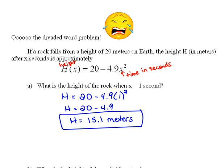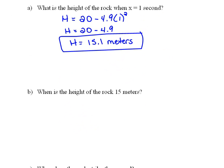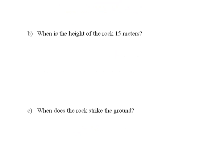Alright, let's look at the next part. The next part says, when is the height of the rock 15 meters? Well, remember, our equation said h equals 20 minus 4.9x squared. Now, I realize that I put h here instead of h of x, but kind of for simplification purposes, so we can see that this is the height, I can do that.